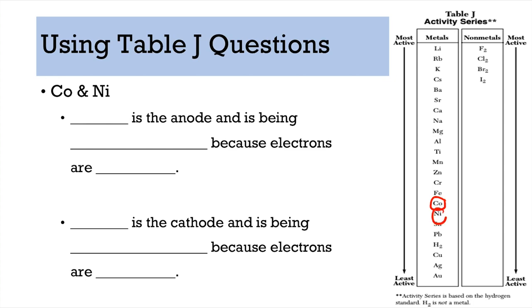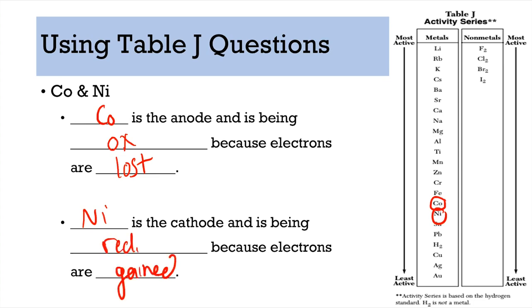Next pair: cobalt and nickel. Cobalt is higher on Table J — that means it is the anode, which means it is oxidized, which means electrons are lost. That means nickel is the cathode — it is being reduced and electrons are being gained.